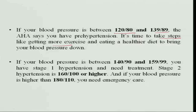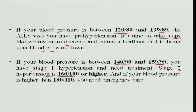If the blood pressure is between 140/90 and 159/99, this is Stage 1 hypertension, where medication must be started. Stage 2 hypertension is 160/100 or higher, requiring continuous medication and monitoring along with light exercise. If blood pressure is higher than 180/110, it becomes an emergency where the person must be hospitalized and blood pressure brought down.